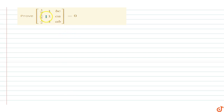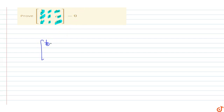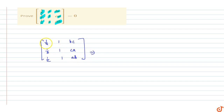In this question we have to prove that the value of this matrix equals 0. The matrix elements are 1/a, b, c in the first row; 1/b, c, a in the second row; and 1/c, a, b in the third row. We need to show that the determinant of this matrix equals 0.